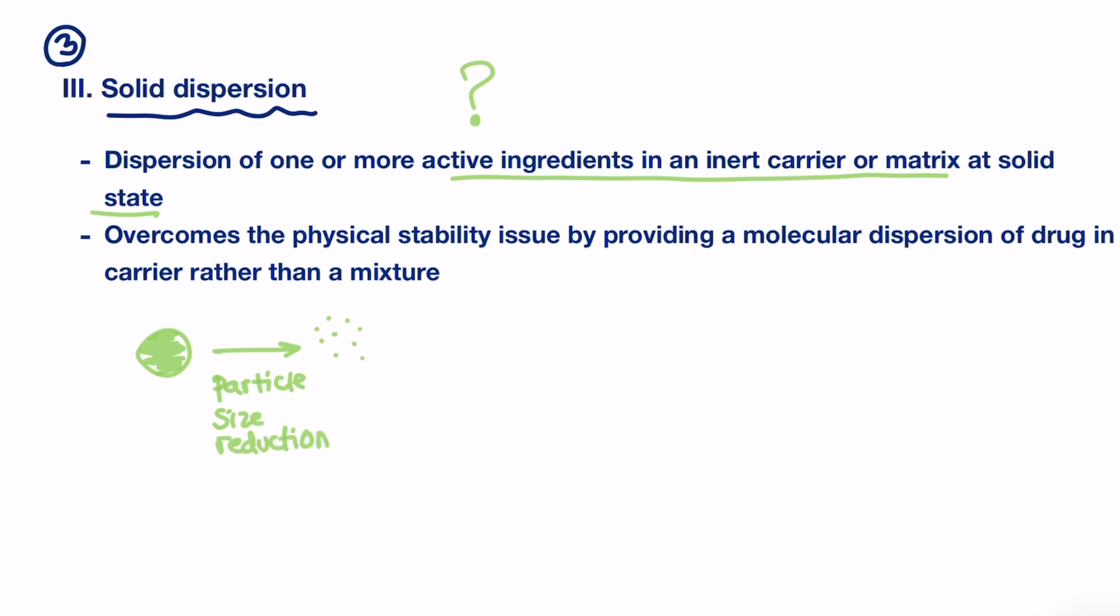So instead of a mixture of a drug and a carrier, we are dispersing the drug in the carrier, which means this carrier surrounds each particle and acts like a physical barrier. That prevents these small particles from aggregating together to form larger particles. And by this, we overcome the problem of the physical instability faced with particle size reduction method. This is simply solid dispersion concept, and with this, we reach the end of part one.